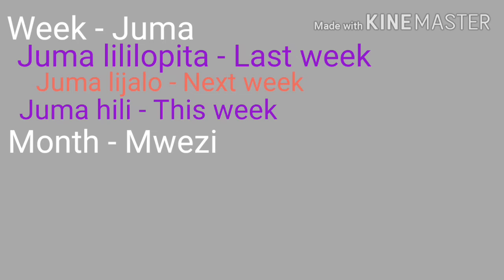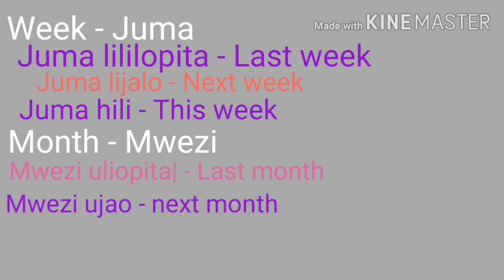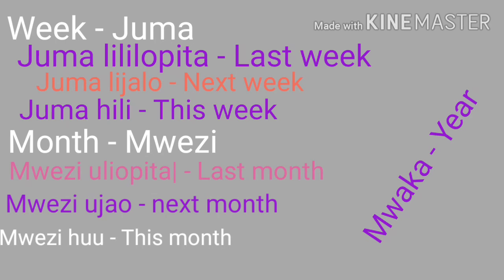Month is mwezi. By the way, mwezi is also the moon — the moon is called mwezi in Swahili, so mwezi can mean a month or the moon. Mwezi uliopita means last month. Mwezi ujao means next month — for example, mwezi ujao unapendeza. Mwezi huu means this month — mwezi huu ni mzuri, this month is nice. Note that mwezi and juma are in two different noun classes.